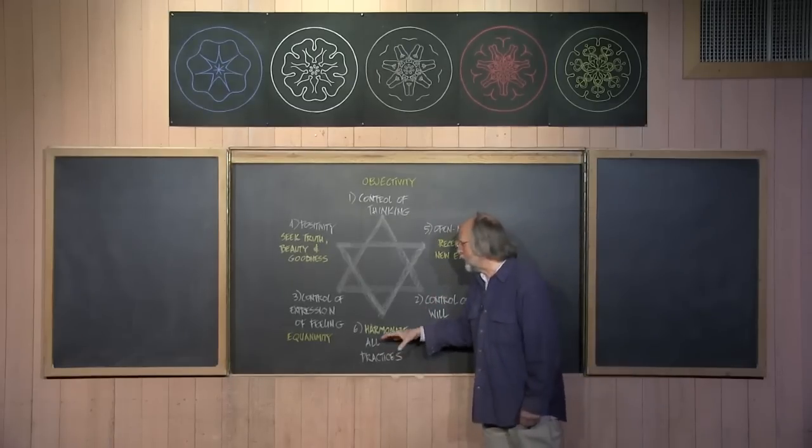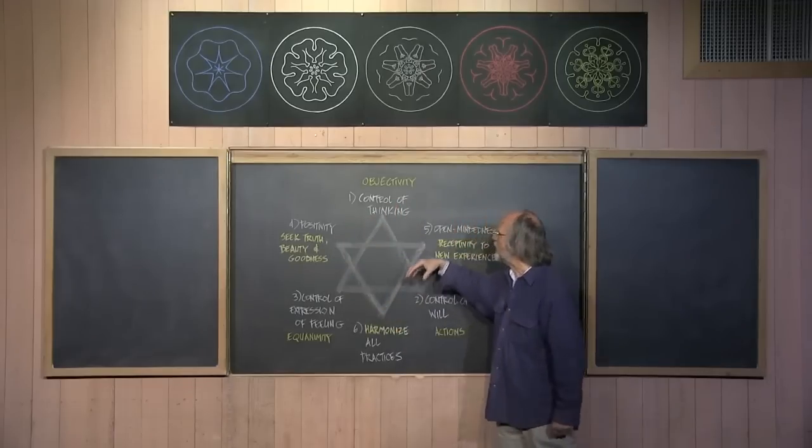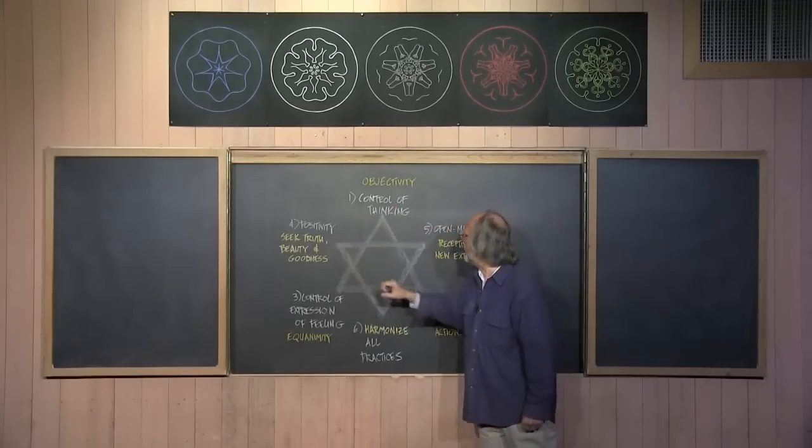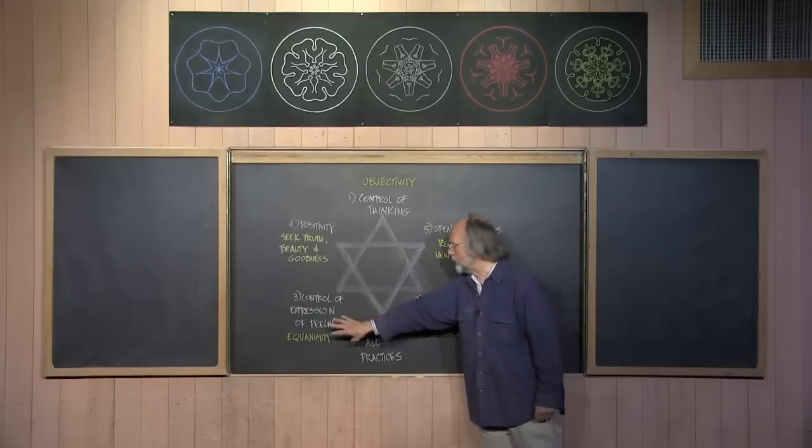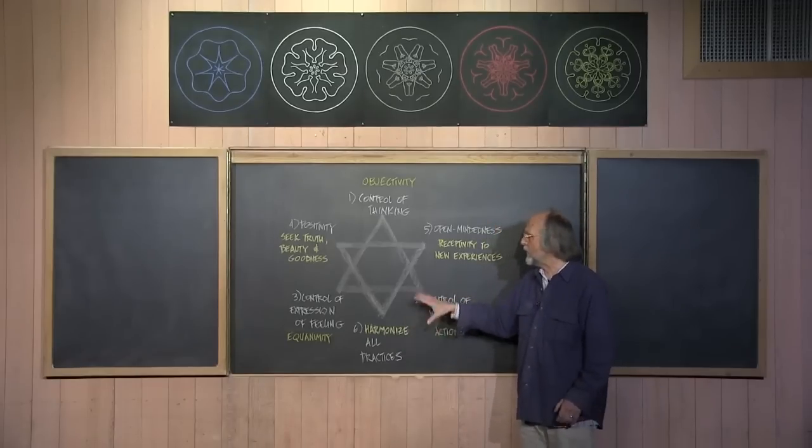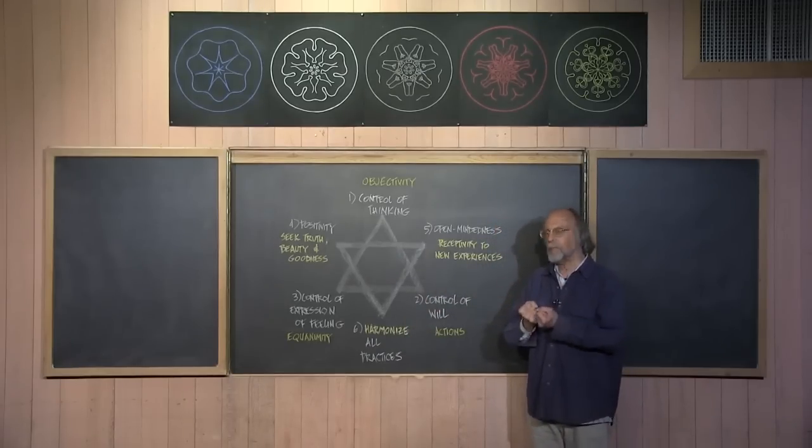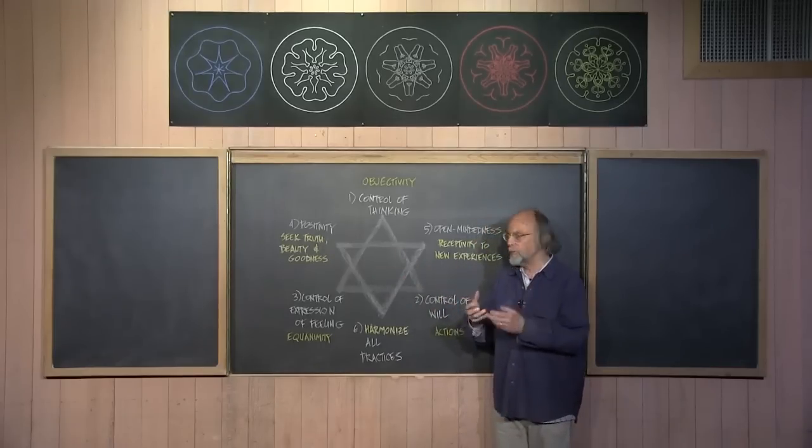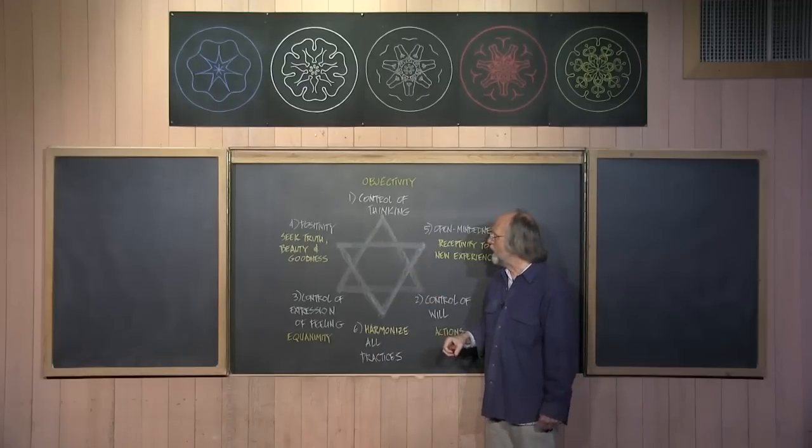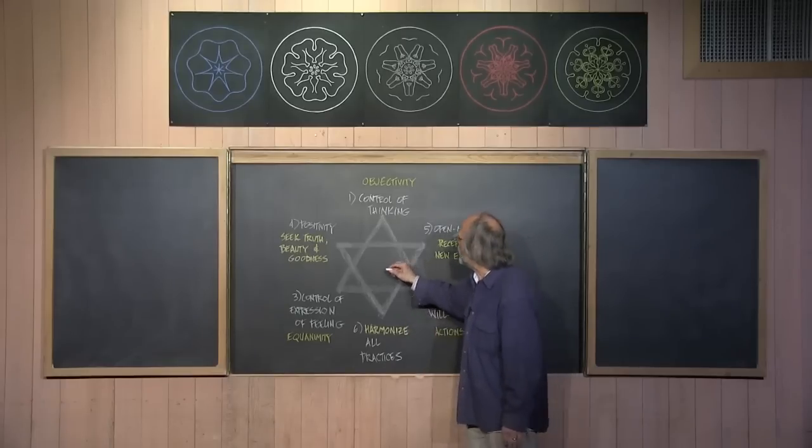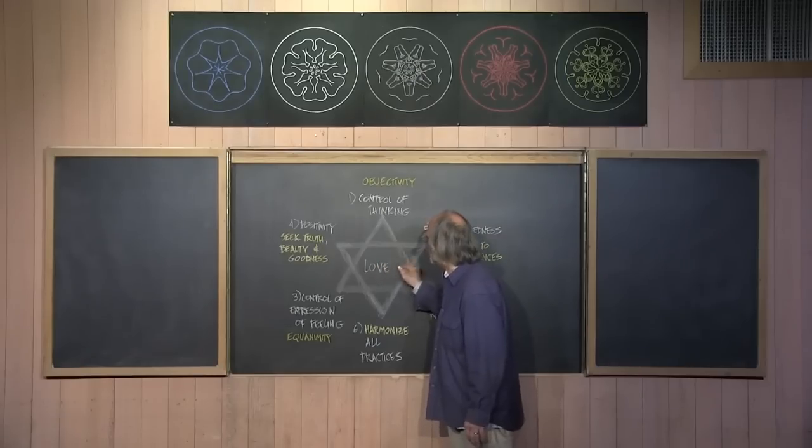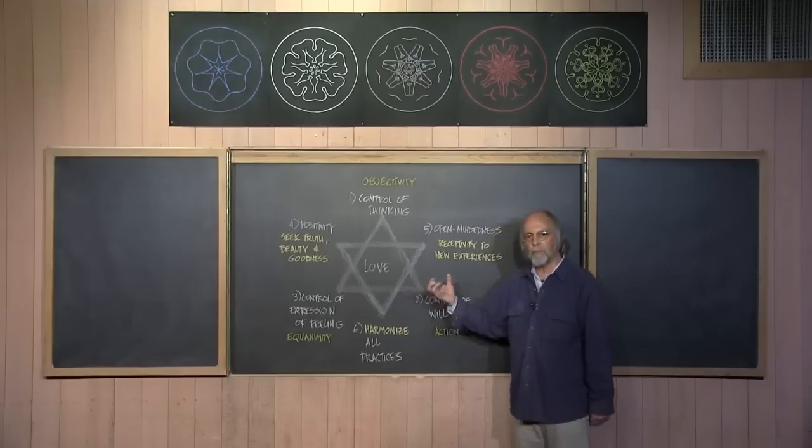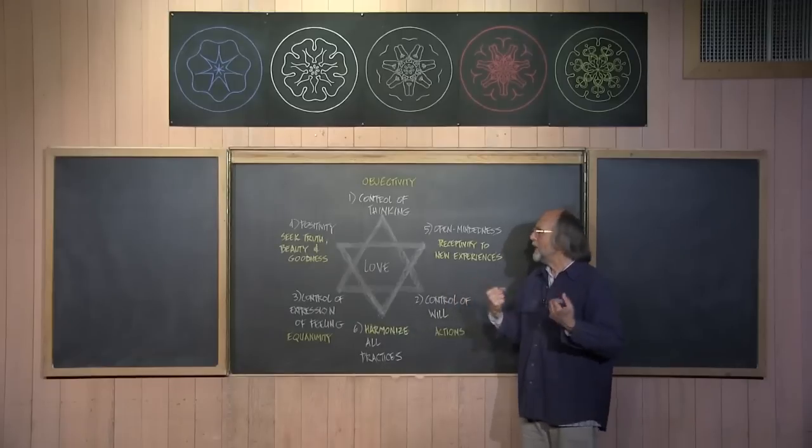The sixth exercise is really then to practice, he says, to practice these in various combinations. The objectivity of thinking with positivity or open-mindedness with the control of the expression of feeling. In this way, he says, we begin to harmonize all the various practices. And this creates a balance and a harmony within the six-petal lotus. And as a result of that, then, the 12-petal lotus comes into a proper balance by forming these six petals. And when the 12-petal lotus is intact, Rudolf Steiner gives us the picture that when these are all brought into proper balance, that something arises in the heart. And in fact, it's the capacity to love. So the capacity to love and the capacity to be creative and the capacity to perceive that another.